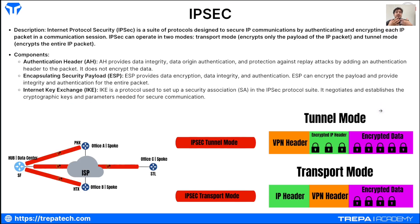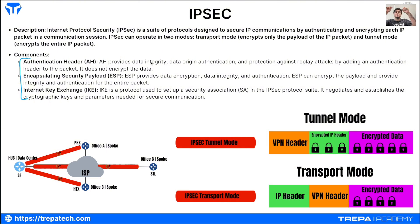IPsec is a tunneling and VPN technology that does provide encryption. The three main components of IPsec VPN tunnels are: the Authentication Header (AH), which provides data integrity, authentication, non-repudiation, and protection against replay attacks; the Encapsulating Security Payload (ESP), which provides encryption; and the Internet Key Exchange (IKE) versions 1 and 2, which sets up the Security Association in the IPsec protocol suite.